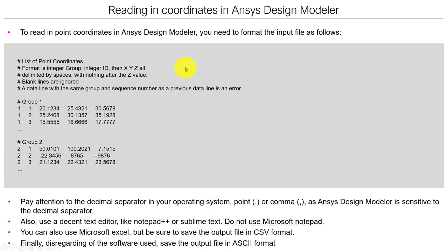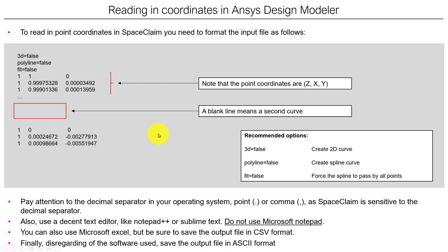Independently of the software you use to manipulate this file, you need to save it in ASCII format. Do not save in binary format. So here, this is how you need to read the coordinates for ANSYS Design Modeler, and this is how you need to read the coordinates for SpaceClaim.